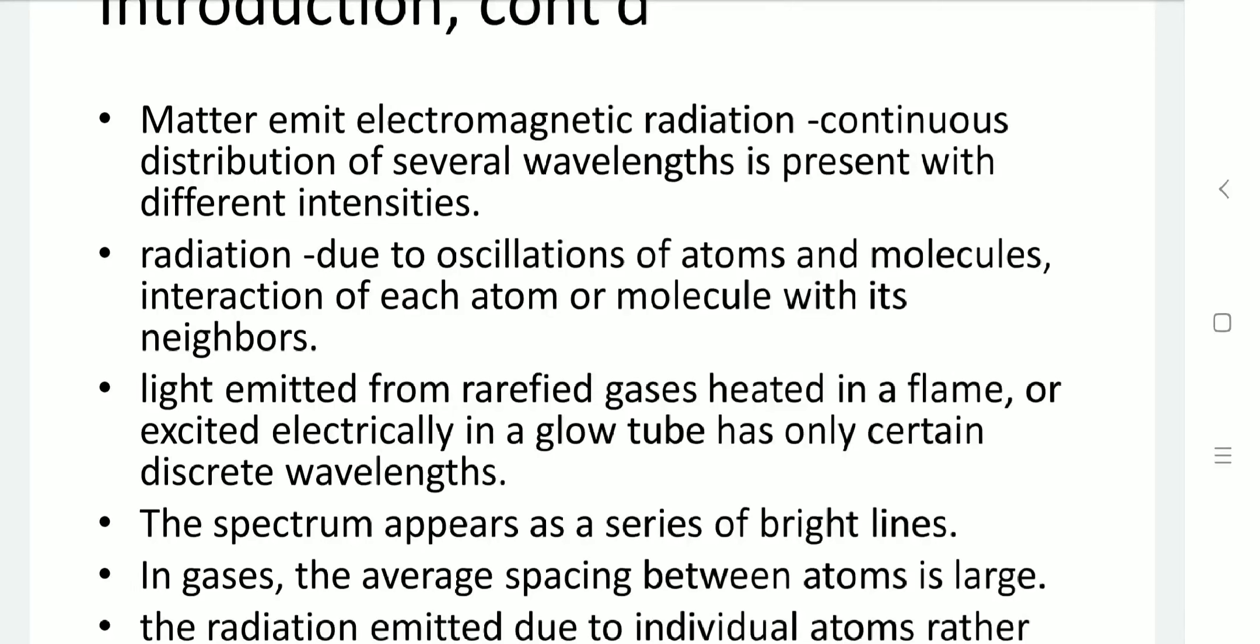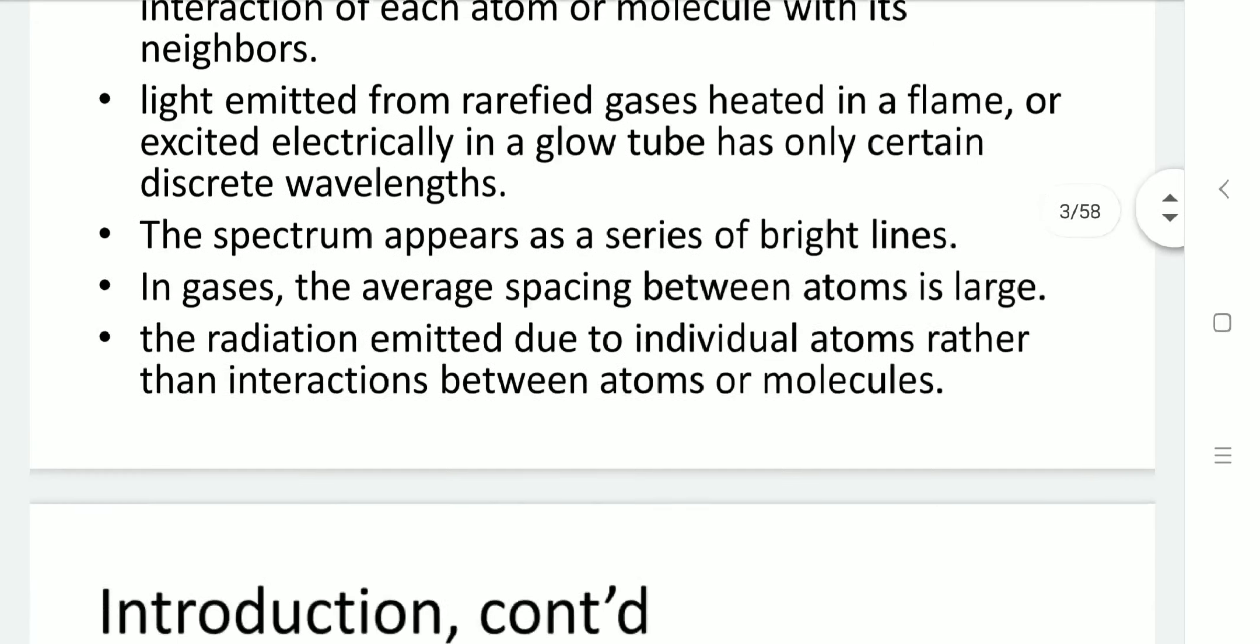If light emission is available in a discharge tube, which is a gas-filled tube heated in a flame or excited electrically in a glow tube, it has only certain discrete wavelengths which give the electromagnetic spectrum. This light appears as a bright line. The average spacing available between atomic structures and radiation emitted is due to individual atoms rather than interaction between atoms or molecules.